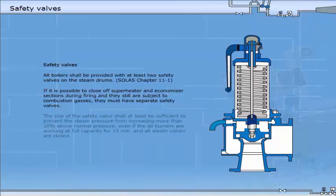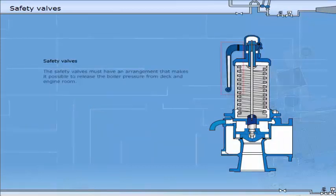The size of the safety valve should at least be sufficient to prevent the steam pressure from increasing more than 10% above normal pressure, even if the oil burners are working at full capacity for 15 minutes and all steam valves are closed. The safety valves must have an arrangement that makes it possible to release the boiler pressure from deck and engine room.